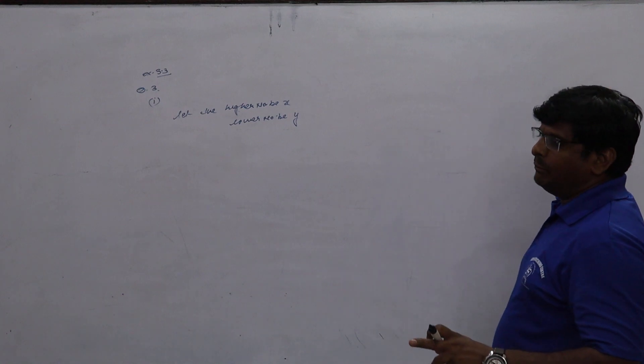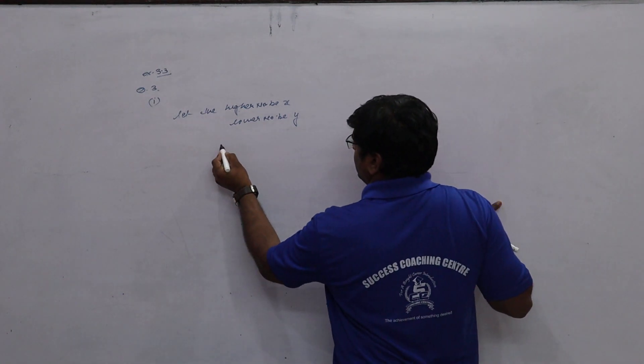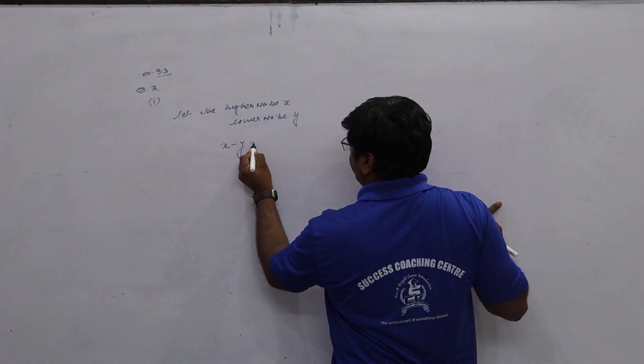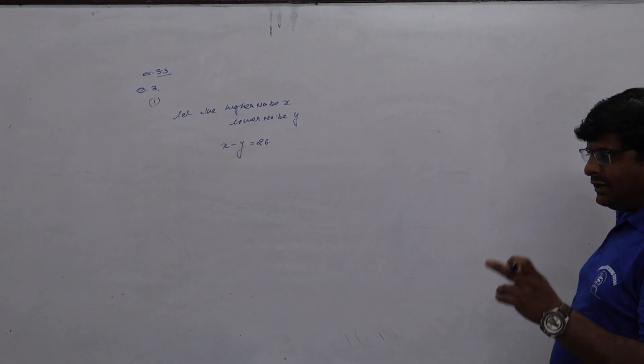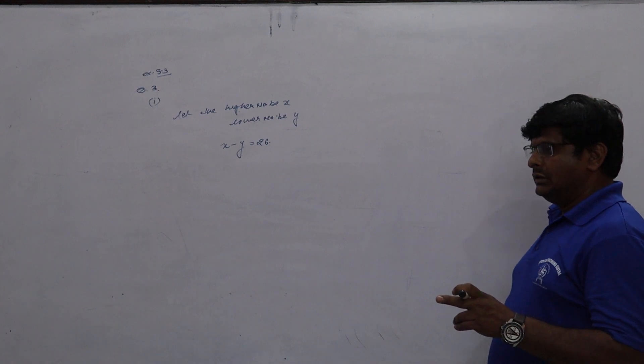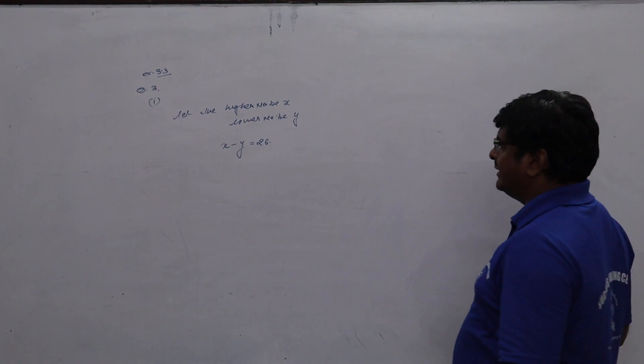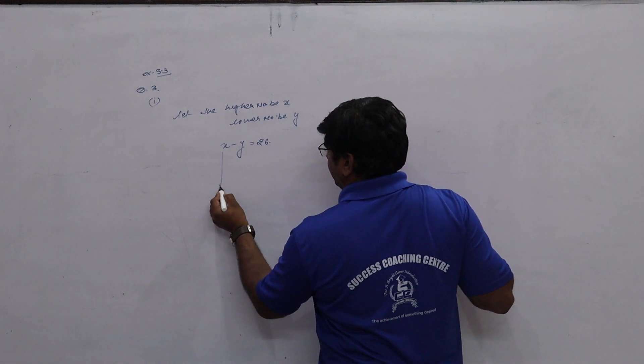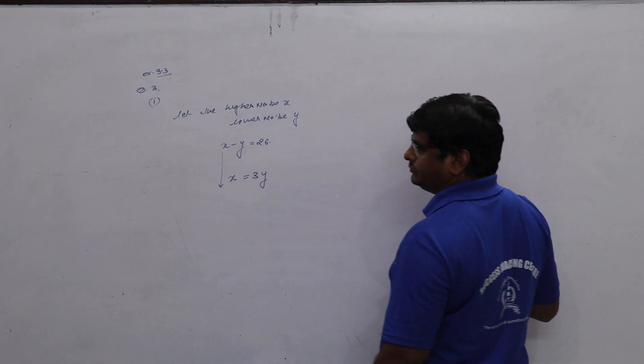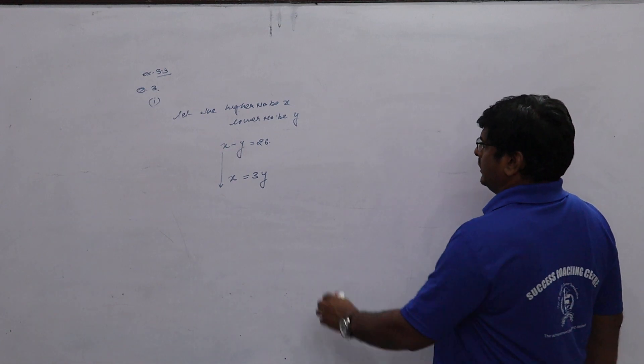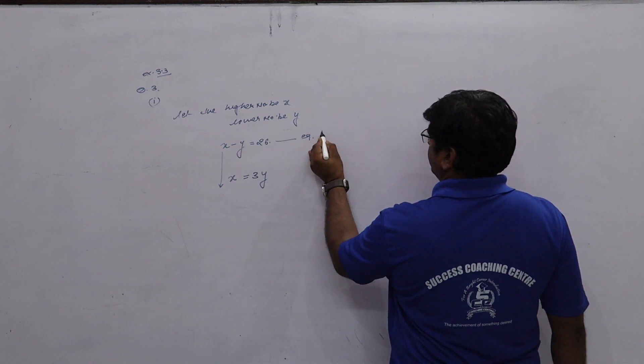The difference between two numbers, that means x minus y is equal to 26, and one number is 3 times the other. The higher number x is equal to 3y. This is your equation number first.